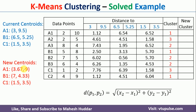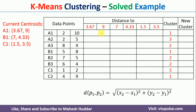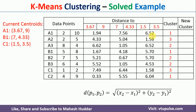We consider the new centroids as current centroids and calculate distances again. For example, one data point has distances of 1.94, 7.56, and 6.52, so 1.94 is smallest and it is assigned to cluster 1. After completing all assignments, we compare the previous assignment and the current assignment — both are exactly the same. This shows that all data points have converged to their respective clusters.